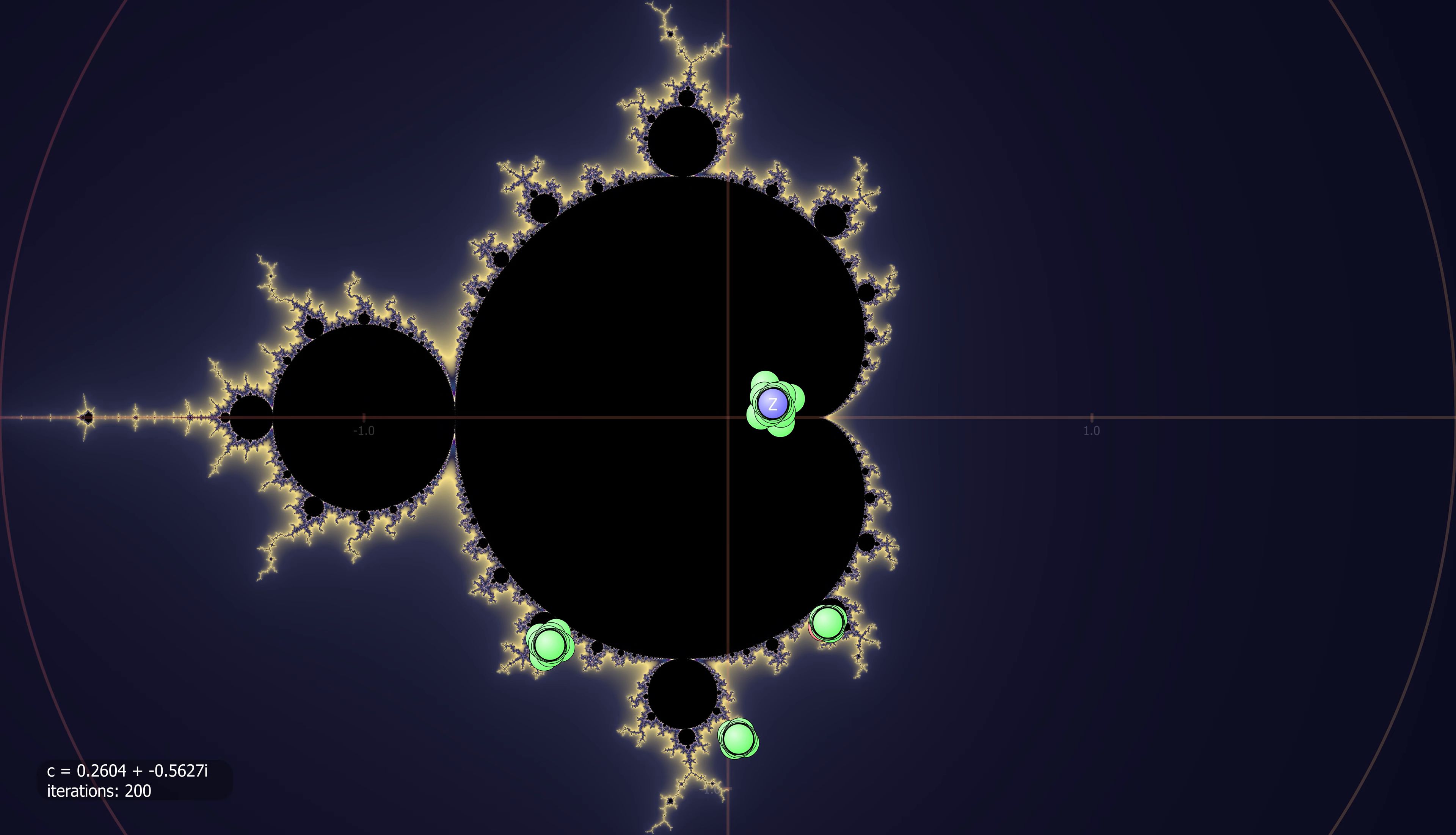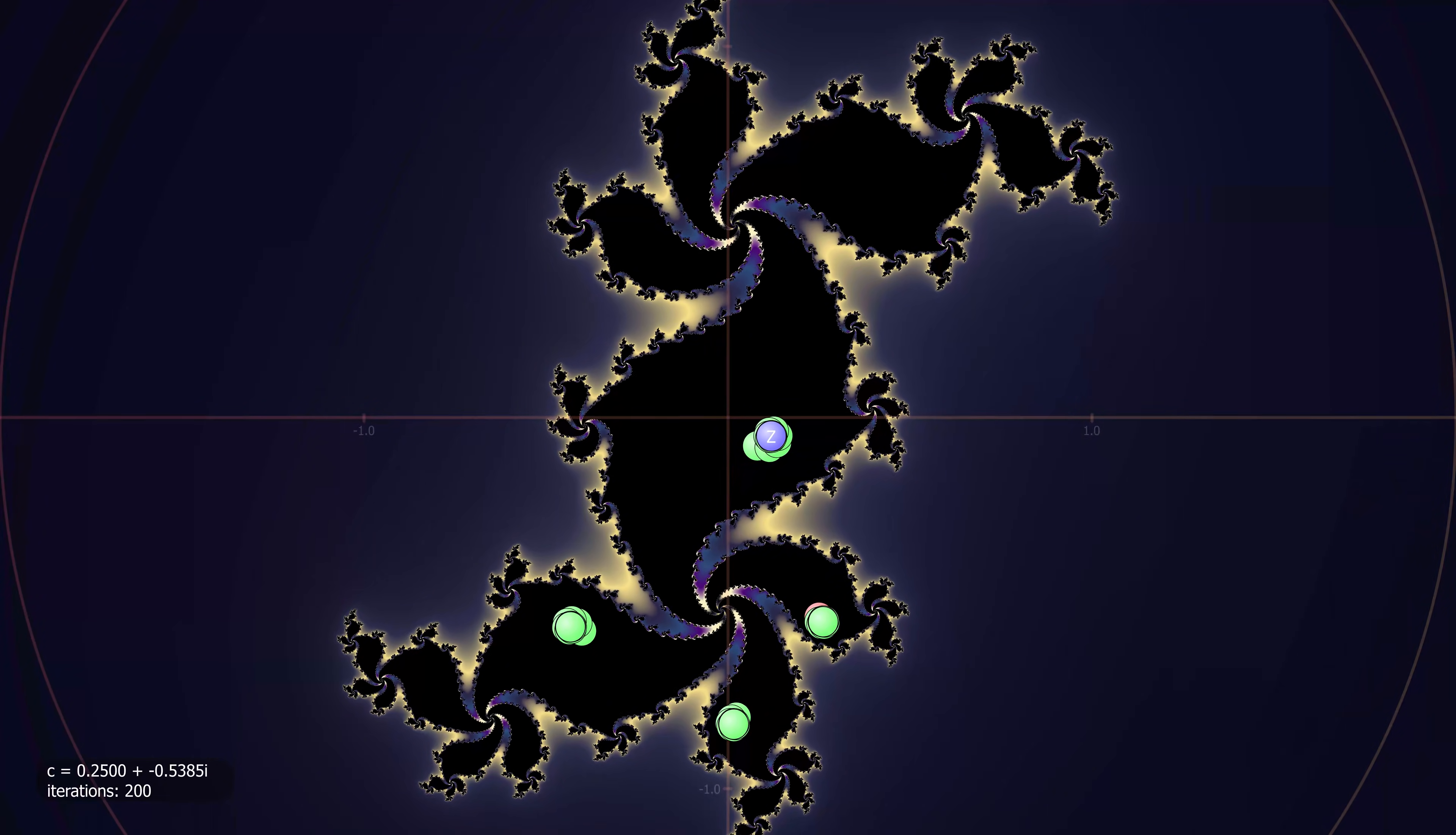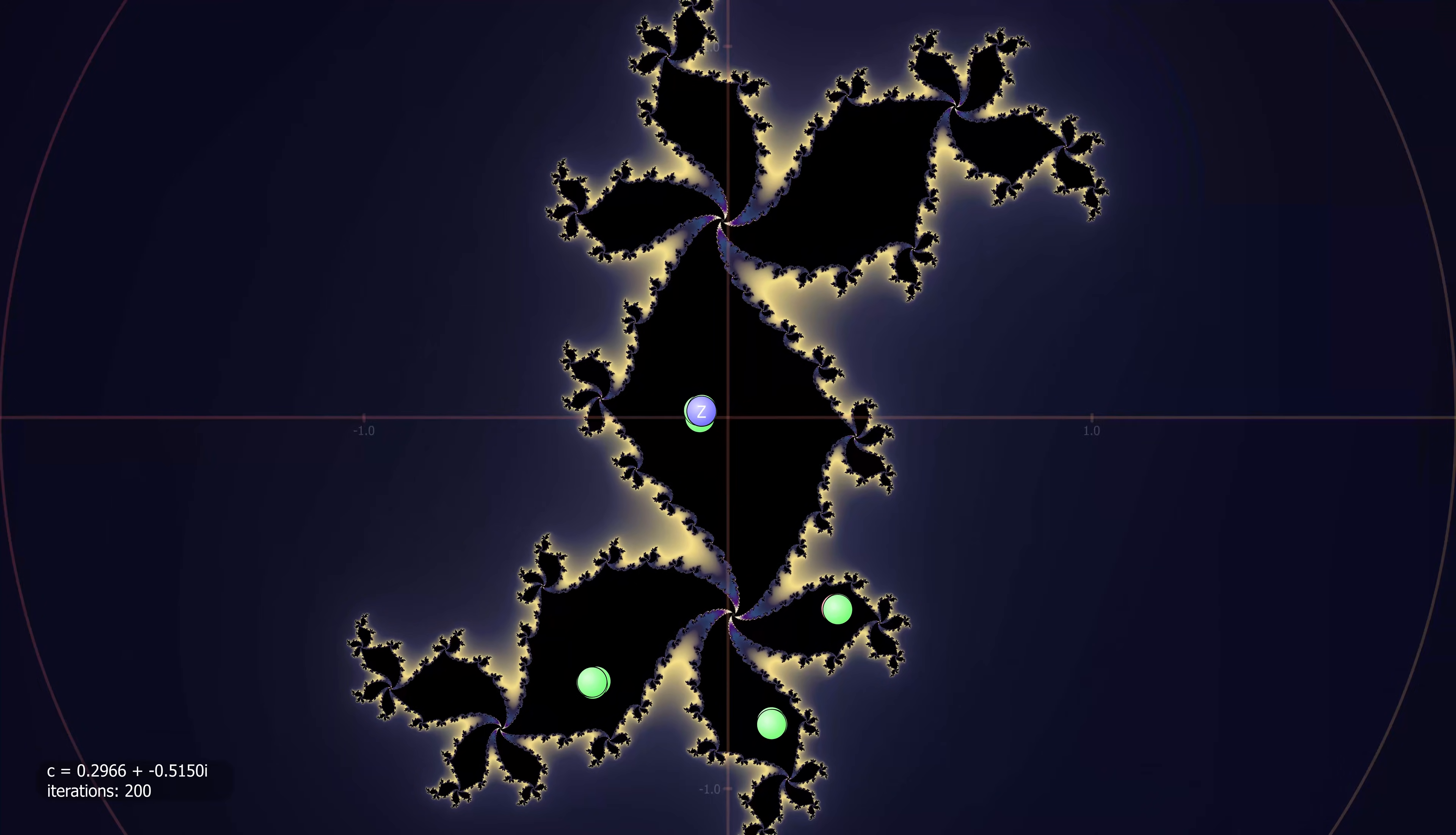A period four bulb now. Remember when we make the Mandelbrot orbits, we always start at Z equals zero. So we are looking at the Julia set and seeing the orbit of the centermost pixel. I haven't rendered a spot at zero because it clogs up the images.